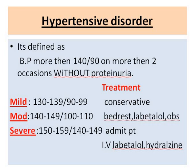Another disorder is hypertensive disorder in pregnancy, defined as BP more than 140/90 on more than two occasions without proteinuria. Mild BP ranges from 130–139 systolic and 90–99 diastolic and is treated conservatively. Moderate hypertension ranges from 140–149 systolic and 100–110 diastolic — the mother is advised bed rest and given labetalol. In severe cases with systolic 150–159 and diastolic 140–149, the patient is immediately admitted and given IV labetalol and hydralazine.